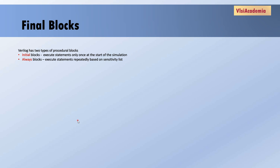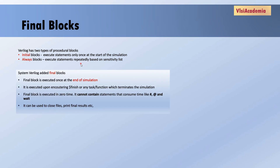Before moving on to final blocks, let's revise the basic procedural blocks in Verilog. In Verilog there are two types of procedural blocks: initial blocks and always blocks. In initial blocks, statements are executed only once at the start of simulation. If we want to execute statements repeatedly we use always blocks, which execute based on the sensitivity list. On top of that, SystemVerilog has added one more procedural block called final blocks.